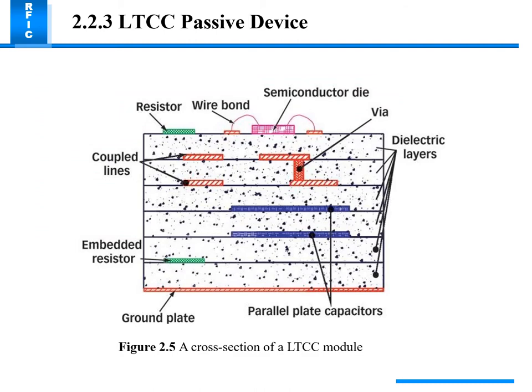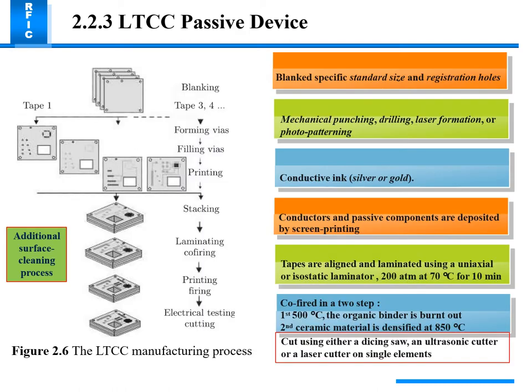The LTCC passive device cross-section shows a crown plate, parallel plate capacitor, embedded resistor, coupled lines, and a resistor connected on top with wire-bonded semiconductor die. Dielectric layers play a very important role in passive devices. The LTCC manufacturing process also offers a planar blank with specific industrial standard sizes.